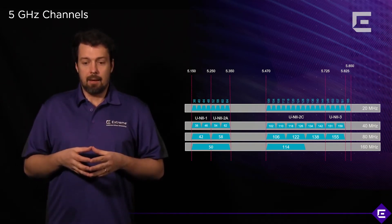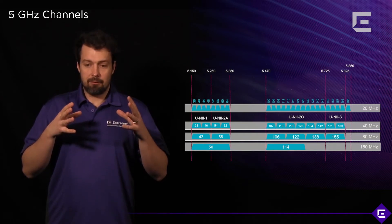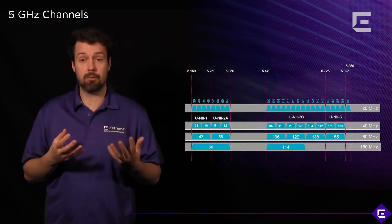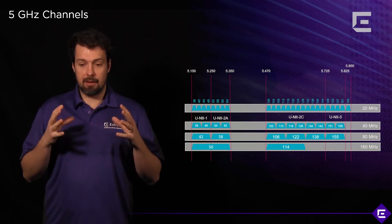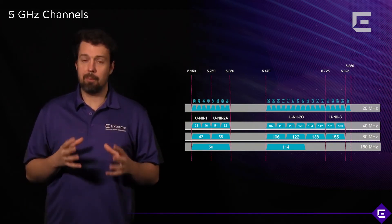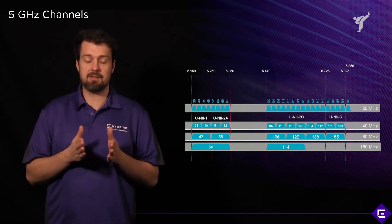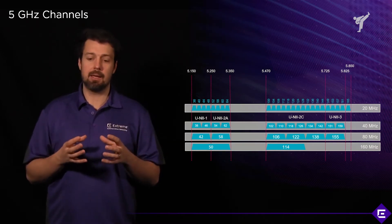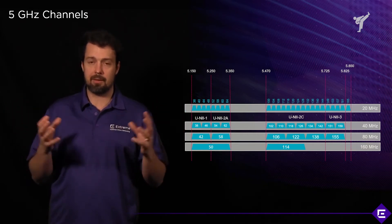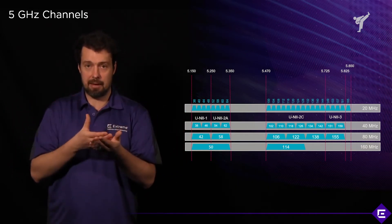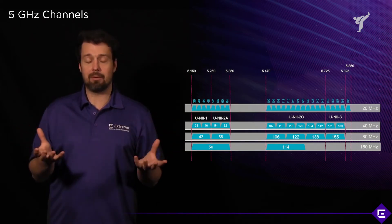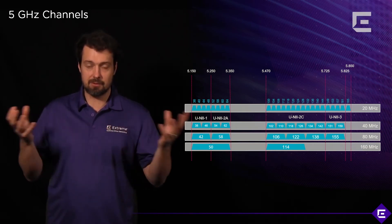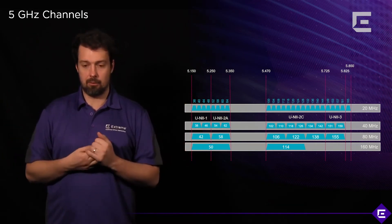The 5GHz channel bands are UNII-1, UNII-2, UNII-3, and UNII-3 Extended. The channels are all based on OFDM modulation, which means they are spaced 20MHz apart. While they may not seem to be overlapping, in reality these OFDM channel masks do overlap slightly if access points are placed very close to each other, so do not mount access points very close to one another.